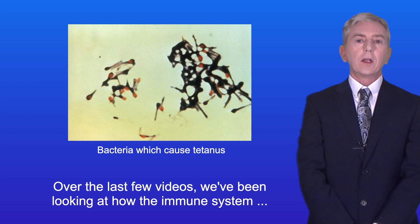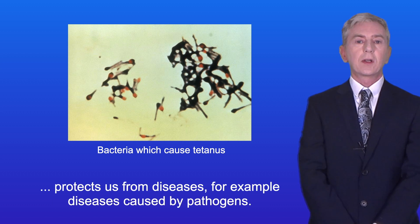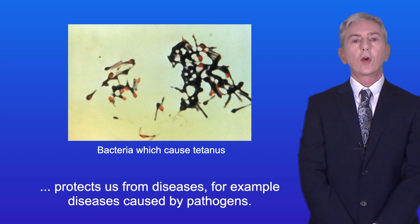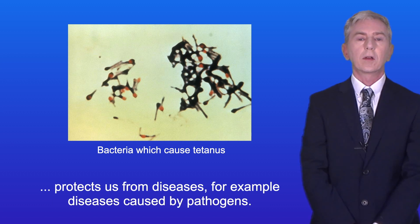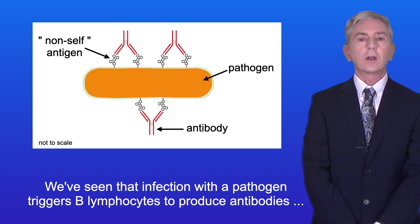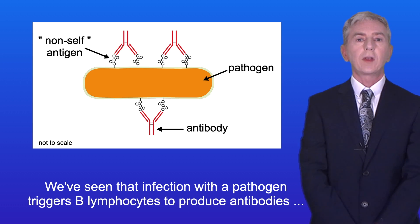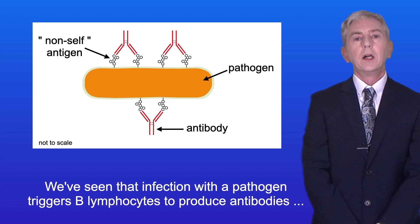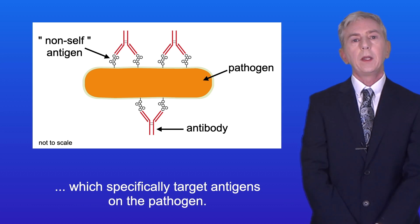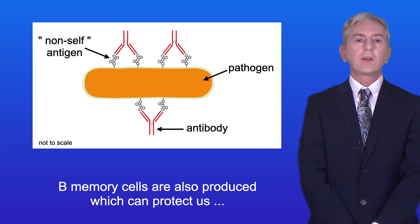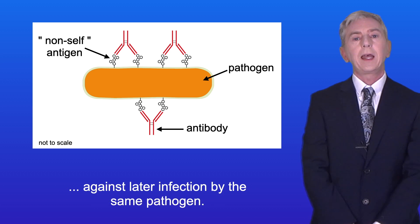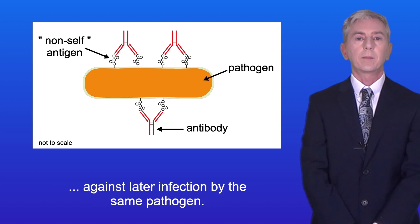Over the last few videos we've been looking at how the immune system protects us from diseases, for example diseases caused by pathogens. We've seen that infection with a pathogen triggers B lymphocytes to produce antibodies, which specifically target antigens on the pathogen. B memory cells are also produced, which can protect us against later infection by the same pathogen.